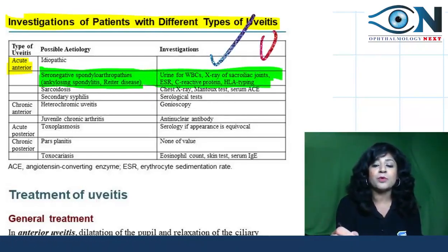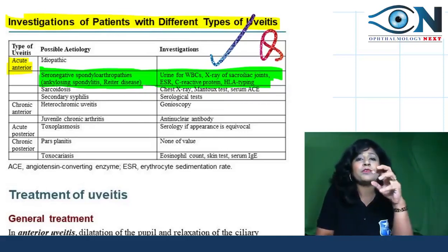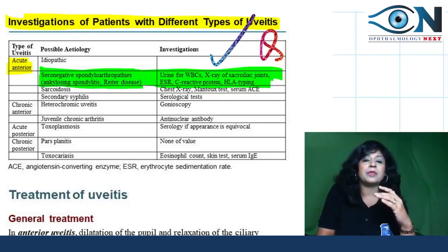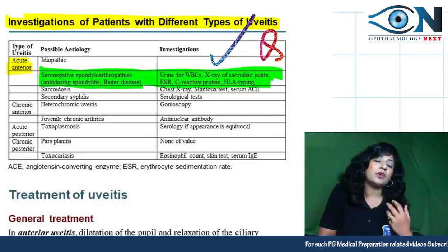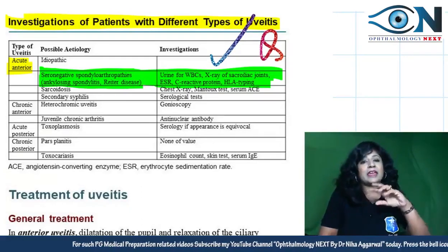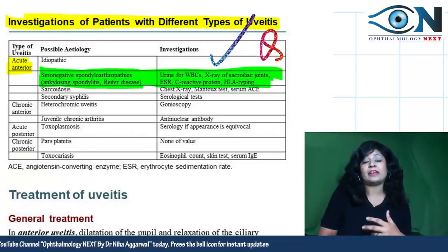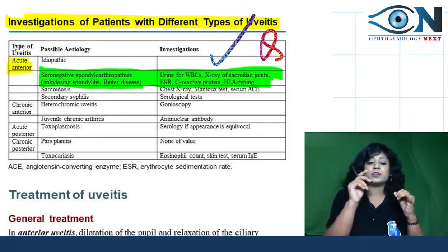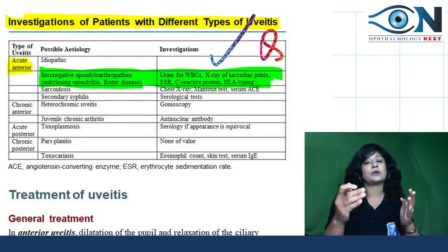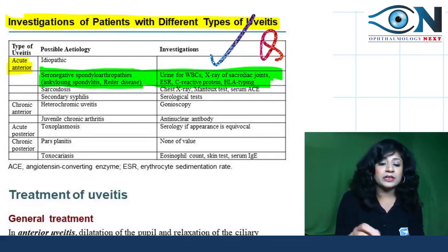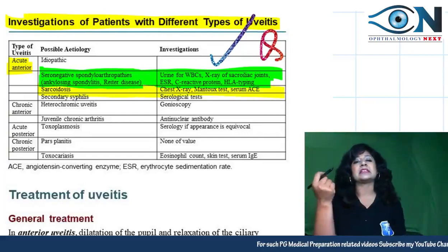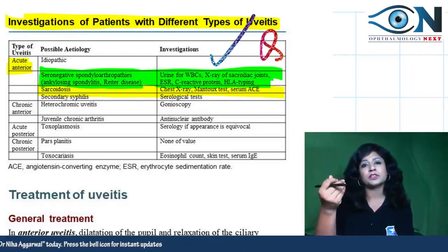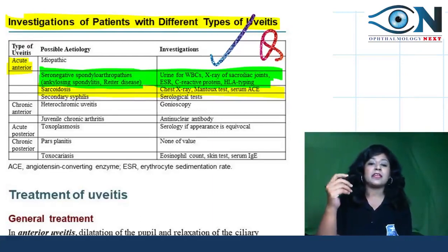This is a high-yield concept — questions can be directly lifted from this flowchart in clinical case format. You should think about what investigations to advise: urine for RBC, serological testing, gonioscopy, or antinuclear antibodies. For sarcoidosis — a granulomatous disease affecting the lungs — you do chest X-ray, Kveim test, and ACE (angiotensin-converting enzyme) antibodies, which are very specific for sarcoidosis. For syphilis, do serological testing.